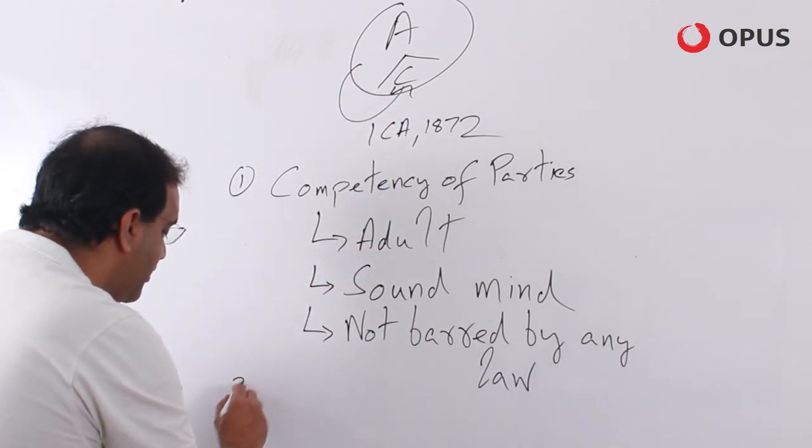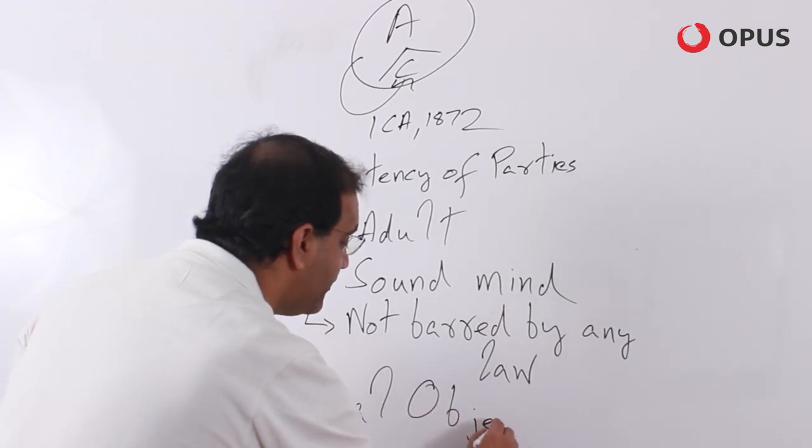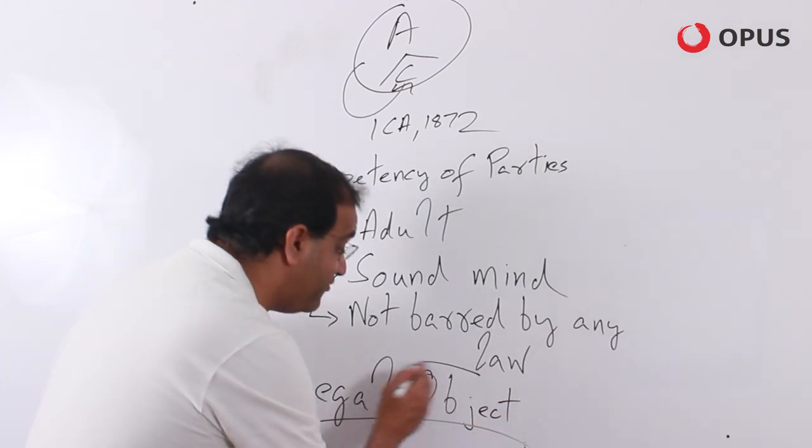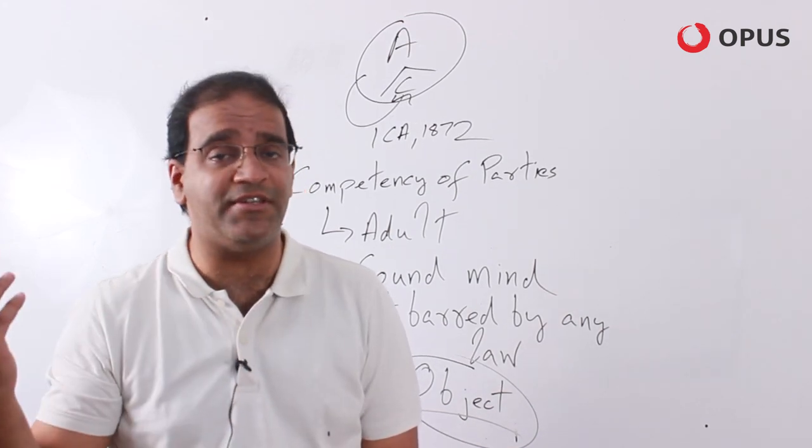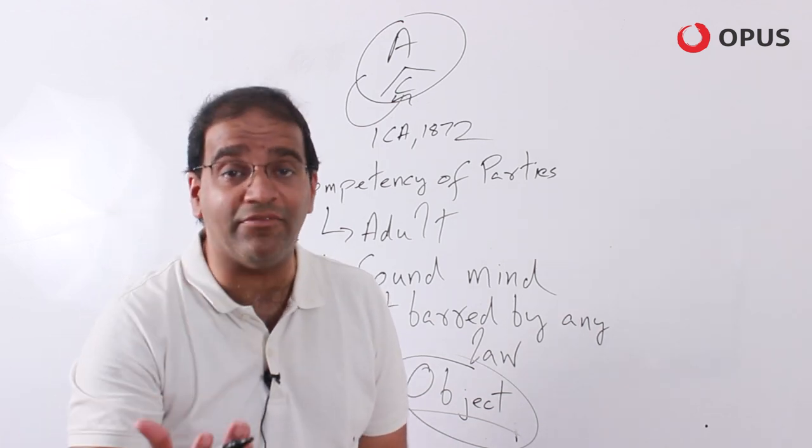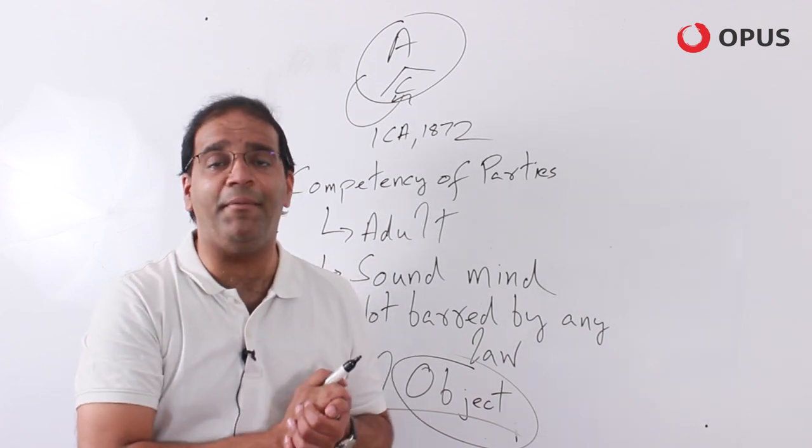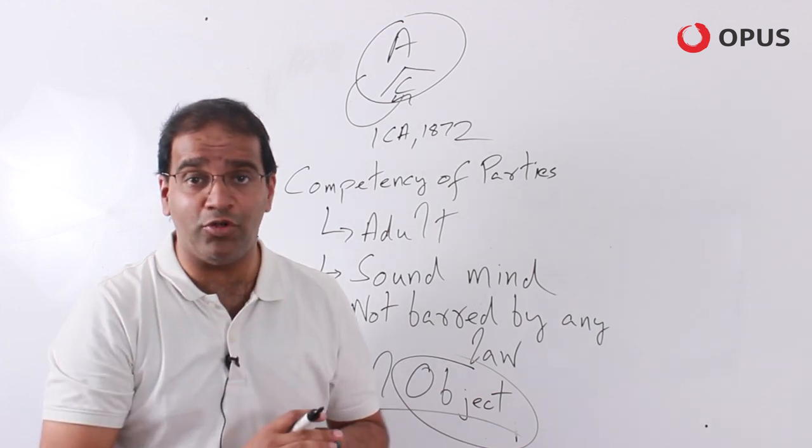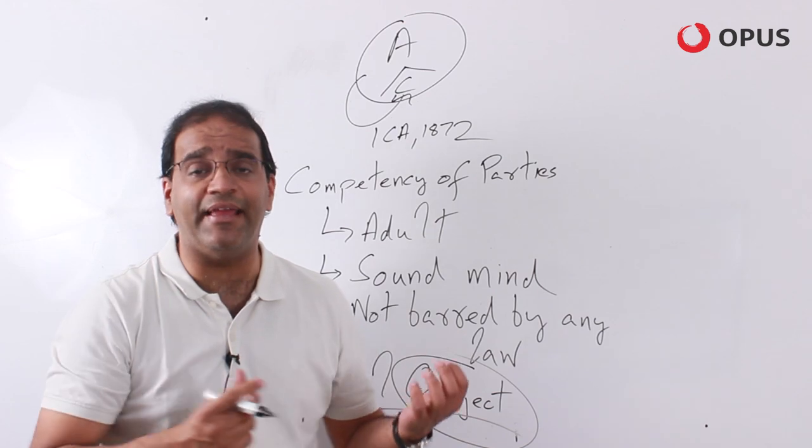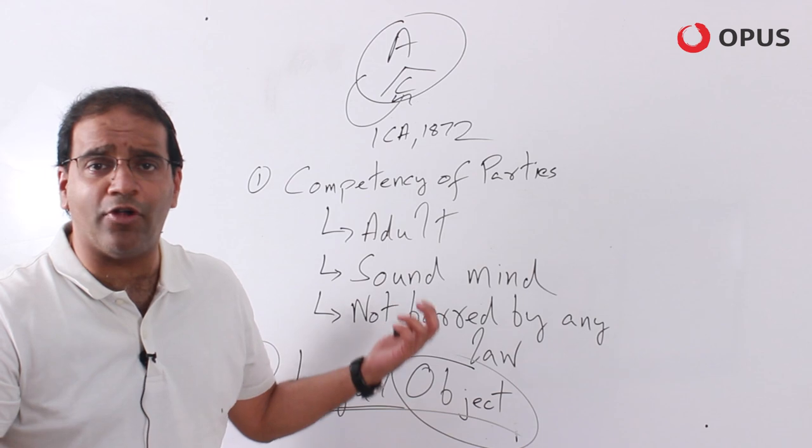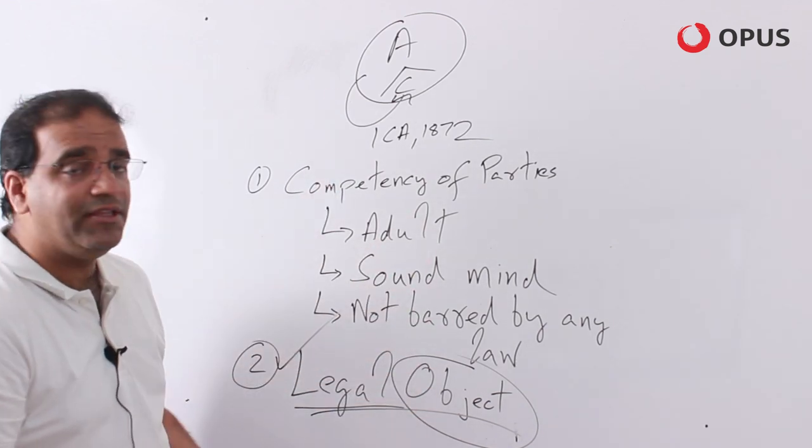The second requirement in order for an agreement to be a contract is that this particular contract or agreement which we are talking about must have a legal object. What is a legal object, or what is an object firstly? An object is the purpose of the contract, the purpose of the agreement. Why have two people or more entered into this particular agreement or contract with each other? What is the reason? What is the objective? What is the purpose? So let's say you and I enter into an agreement where I say I'm going to sell my laptop to you for 20,000 rupees, and you say yes fine, I'll buy your laptop for 20,000 rupees. So my object is to sell the laptop to you and get money from you. Your object is to get the laptop by giving me some money. This object therefore is the buying and selling of a laptop. Is it a legal object? Yes, there's nothing illegal, nothing wrong about buying or selling a laptop. So very well, this test is satisfied.